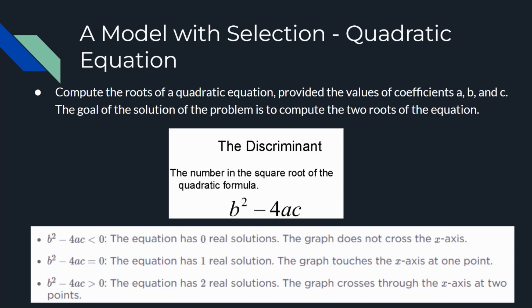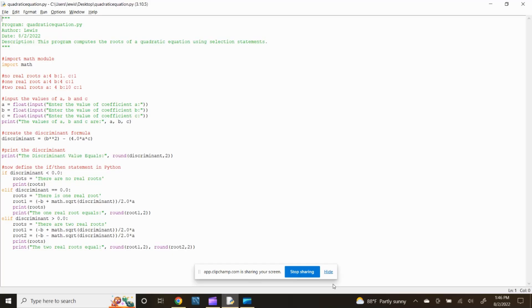If the discriminant value is less than zero, the equation has zero real solutions and the graph does not cross the x-axis. If the discriminant value is equal to zero, the equation has one real solution and the graph touches the x-axis at one point. If the discriminant value is greater than zero, the equation has two real solutions and the graph crosses through the x-axis at two points. Now let's open up the Python IDLE Editor and compute the solution to a quadratic equation as an example of applying multi-layer selection statements.